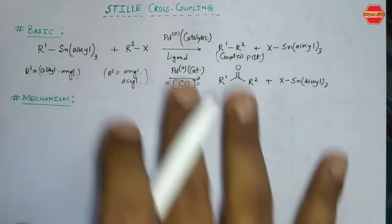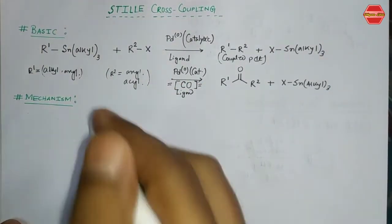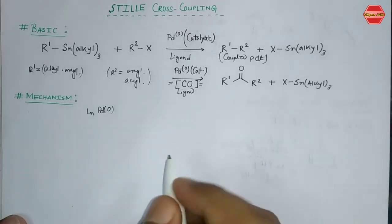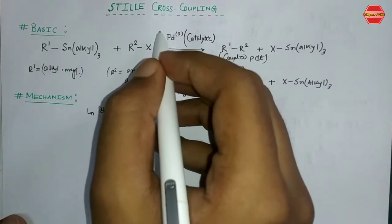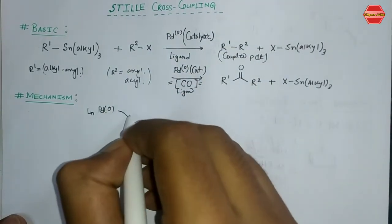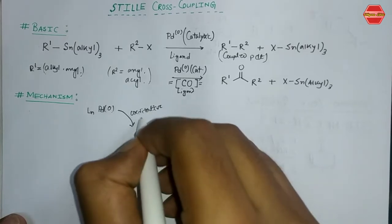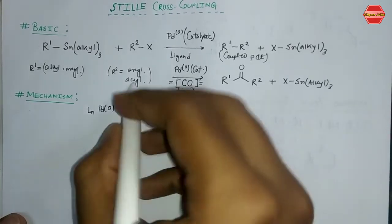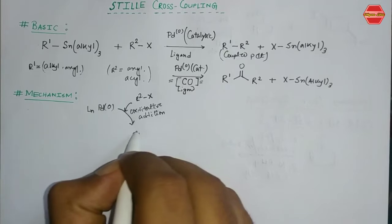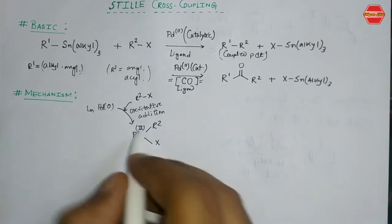The mechanism is quite similar to all the cross-coupling reactions we have discussed previously. First, we use the palladium(0) complex as the starting material. R2X, the organohalide, undergoes oxidative addition. In this step, the palladium is now in oxidation state +2, with R2 and X attached along with the ligand Ln.